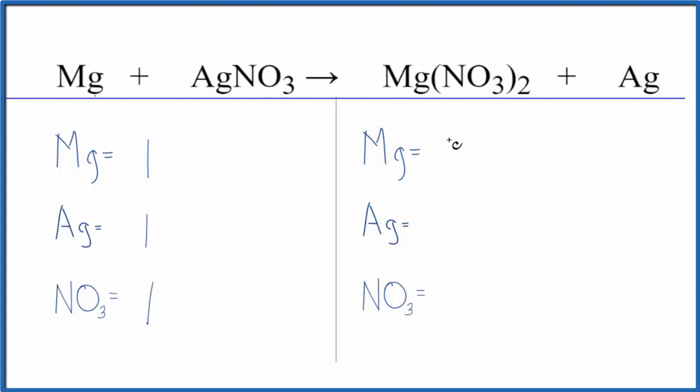Product side: one magnesium, one silver, and then the one nitrate times two, so we have two of these. You can see these numbers are really small. It makes it a lot easier.